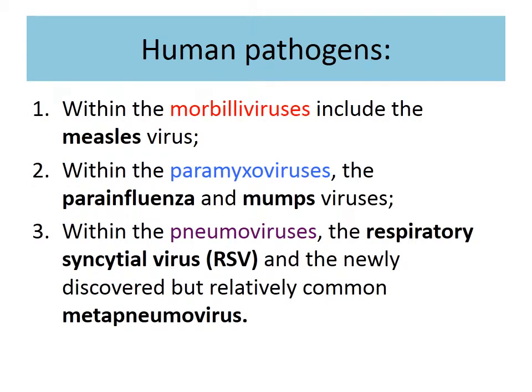Morbillivirus includes the measles virus. Paramyxovirus includes parainfluenza and mumps virus. Within Pneumoviruses, we have respiratory syncytial virus — for which I gave you the drug — and the newly discovered but relatively common metapneumovirus. Keep building your understanding: the theme has been skin involvement, mucous membrane involvement (gastrointestinal, genital, or respiratory tract), and nervous system involvement.